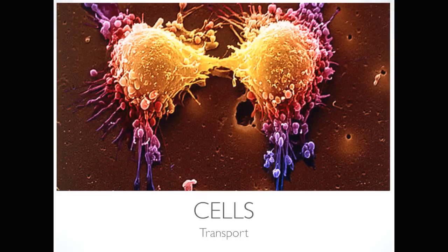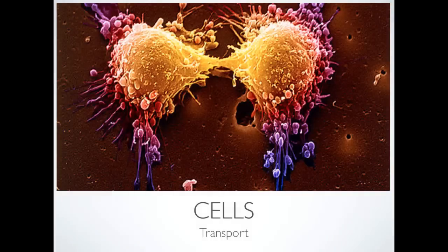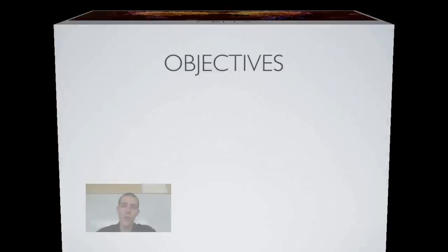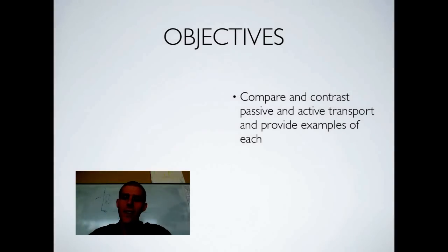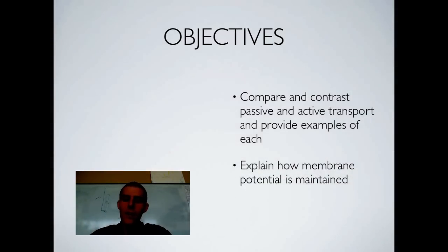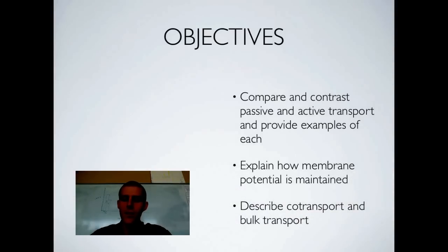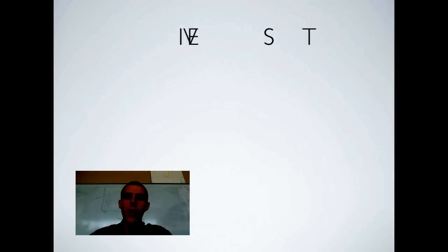Let's go ahead and get into our objectives. First, compare and contrast passive and active transport and provide examples of each. Next, explain how membrane potential is maintained. And finally, describe co-transport and bulk transport.